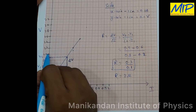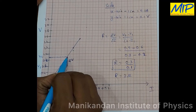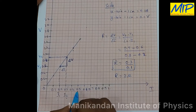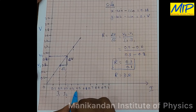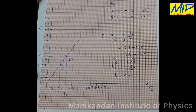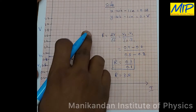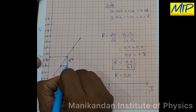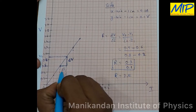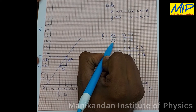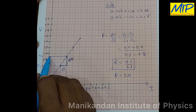The next reading: for 0.4 ampere the potential drop is 1.2 volt. The next reading: current is 0.5 ampere and the potential drop is 1.5 volt. Using these points I am going to draw a straight line — this is my linear curve. As potential increases, current also increases. Taking the slope of this curve gives the change in potential divided by change in current, which is the resistance.